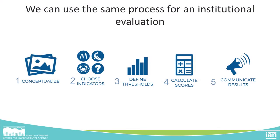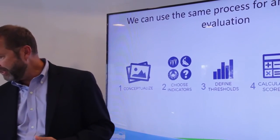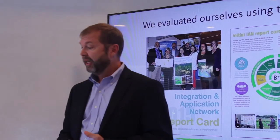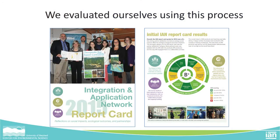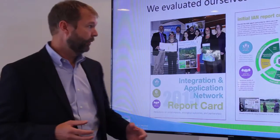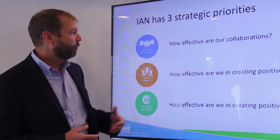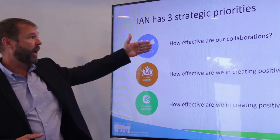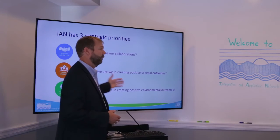Can we take this same five-step process and apply it to an institutional problem — how well are we doing as an institution in achieving our goals? We did this for ourselves and developed the Integration and Application Network report card as a pilot. We turned this process in on ourselves and realized we had three main strategic priorities: how effective are our collaborations, how effective are we in creating positive societal outcomes, and how effective are we in creating the positive environmental outcomes we seek?